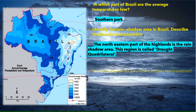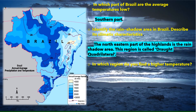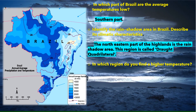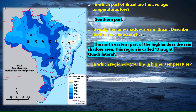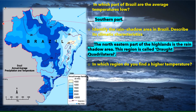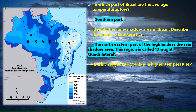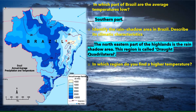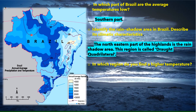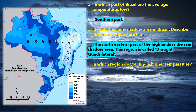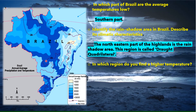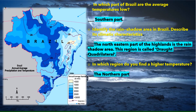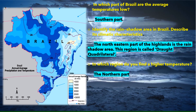In which region do you find high temperatures? Since the equator passes through the northern part of Brazil, this region experiences a hot climate with higher temperatures. So the answer is the northern part of Brazil.